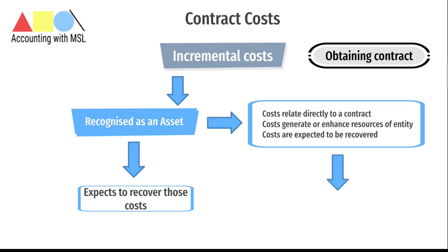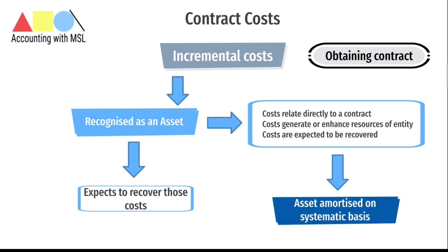The asset recognized in respect of the cost to obtain or fulfill a contract is required to be amortized on a systematic basis that is consistent with the pattern of transfer of the goods or services to which the asset relates.